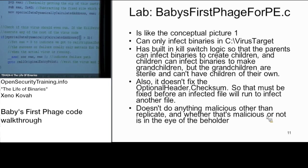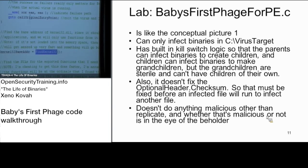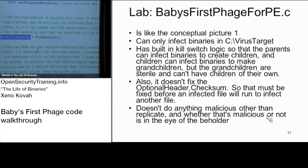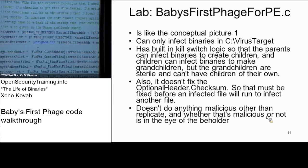We copy the original entry point — but first, if the zeroth entry (the rate-limit field) is greater than one, we immediately call the original entry point. That's the early exit: if we've already infected too many things, just exit out. After that, after getting to main, we call find_kernel32 to get the kernel32 base address.